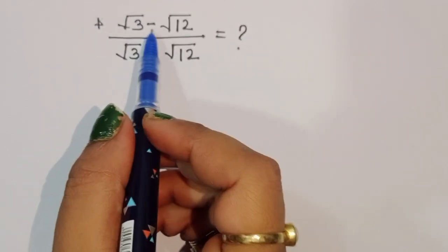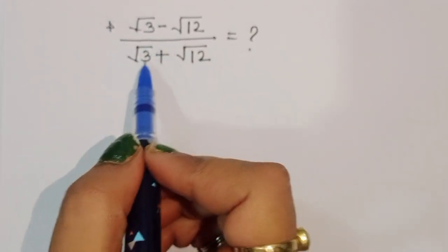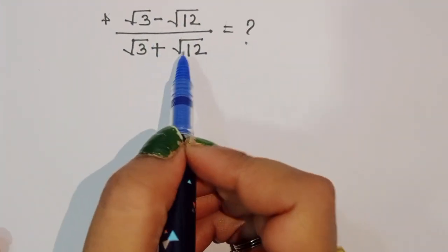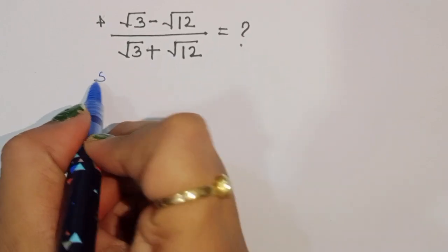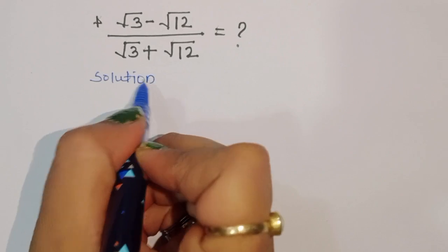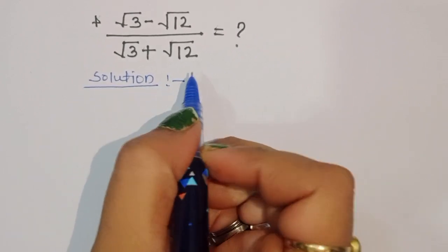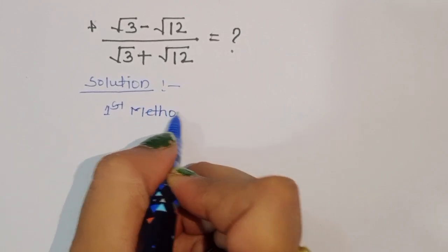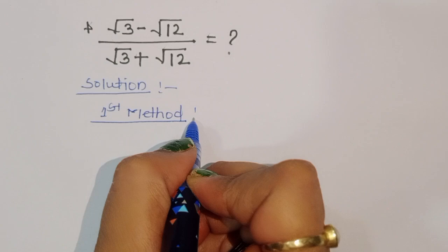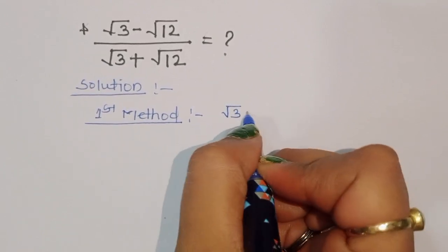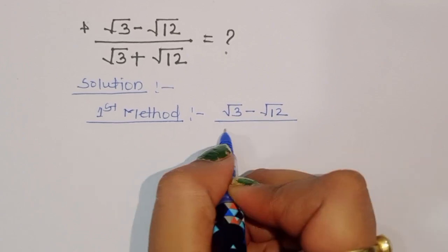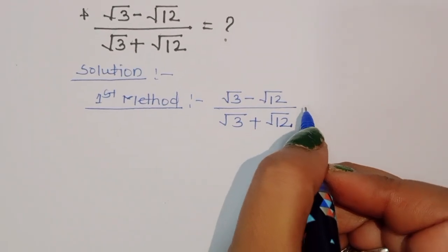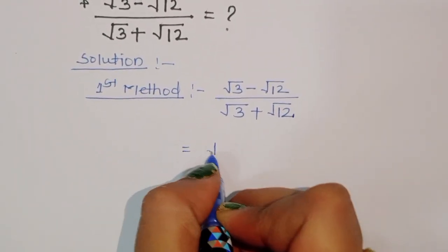The question is: square root of 3 minus square root of 12, divided by square root of 3 plus square root of 12. We have to find out the value of this. Let's see the solution using the first method.